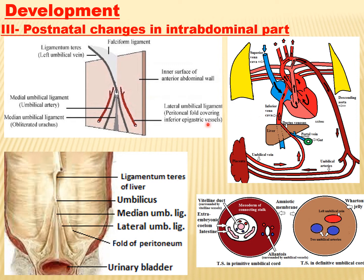Another postnatal change occurs in the umbilical vein. The intra-abdominal part of the umbilical vein is obliterated and fibrosed after birth, forming a ligament that passes upward toward the liver, called the ligamentum teres of the liver, or round ligament of the liver — representing the obliterated umbilical vein.